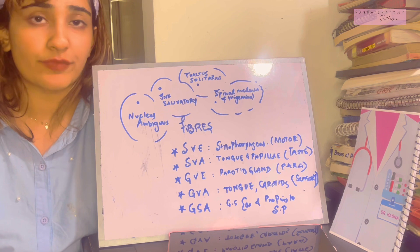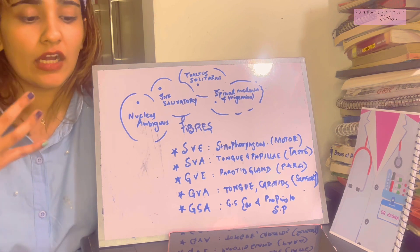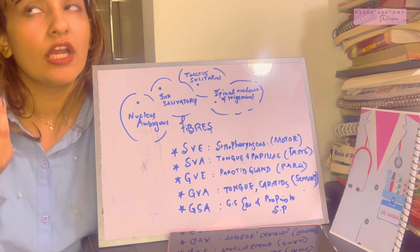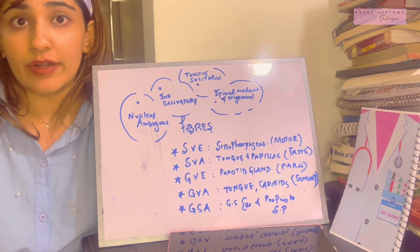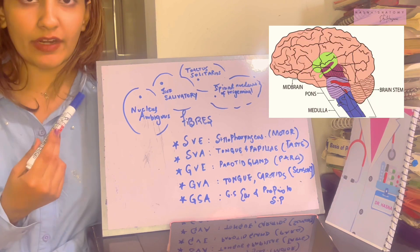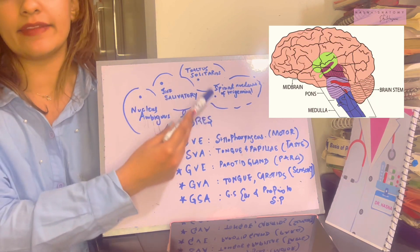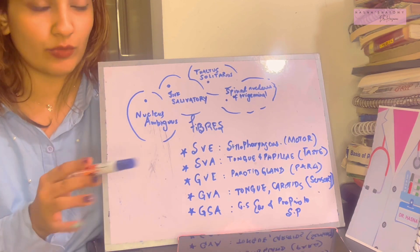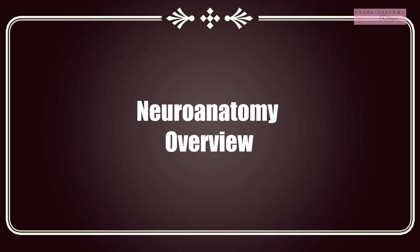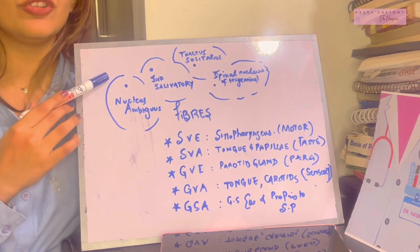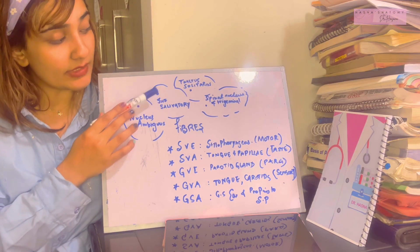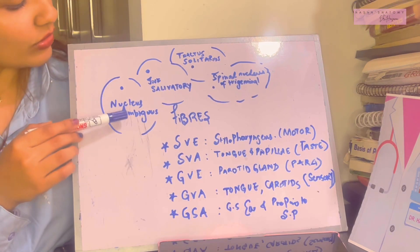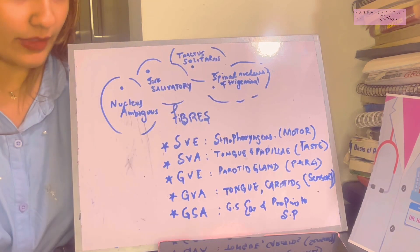Every cranial nerve begins in the brain, and the glossopharyngeal nerve specifically begins in the medulla oblongata, which is part of the hindbrain. It has four nuclei to remember — these will be elaborated in your neuroanatomy course, but for now: the nucleus ambiguus, inferior salivatory nucleus, nucleus of tractus solitarius, and the spinal nucleus of the trigeminal nerve.